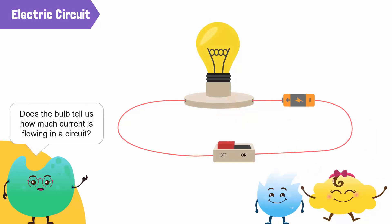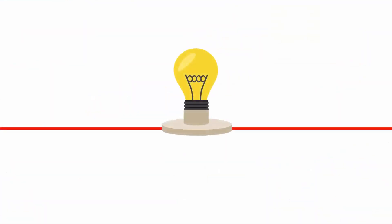But does the bulb tell us how much current is flowing in a circuit? A light bulb tells us that an electric current is flowing in a circuit, but it cannot show how much current is flowing through a circuit.